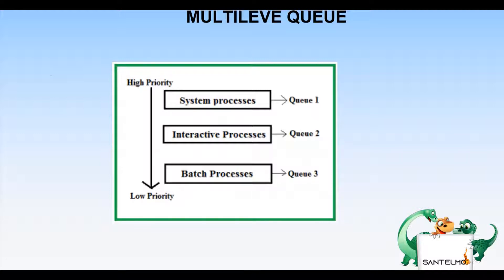All three process types have their own queue, and each queue has its own scheduling algorithm. For example, Q1 uses round robin, Q2 also uses round robin, while Q3 uses the first come first serve CPU scheduling algorithm.